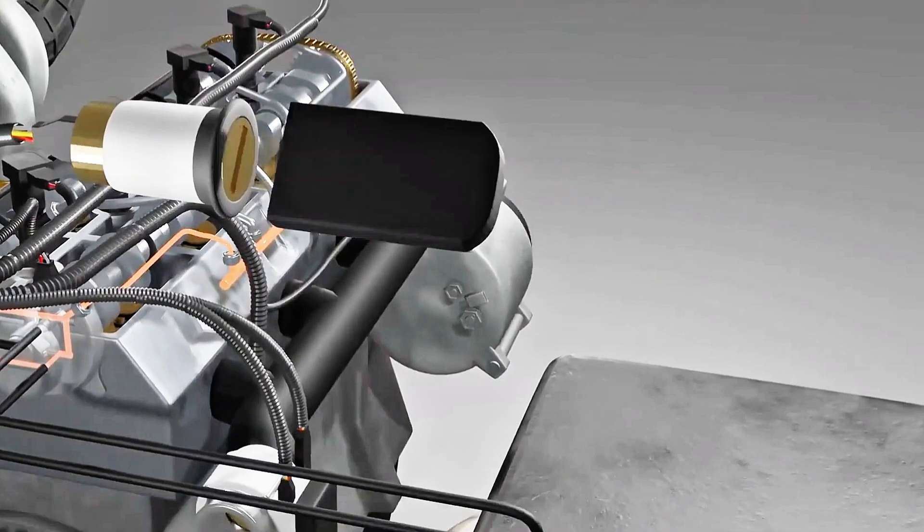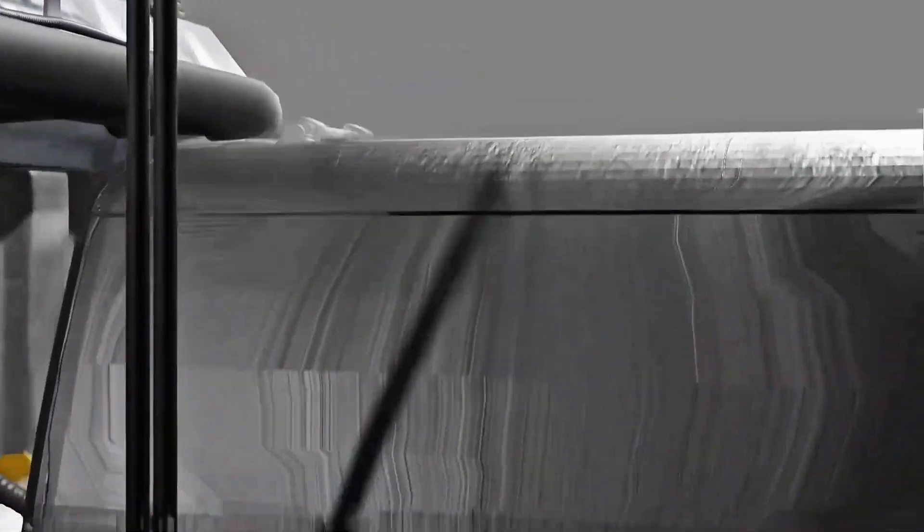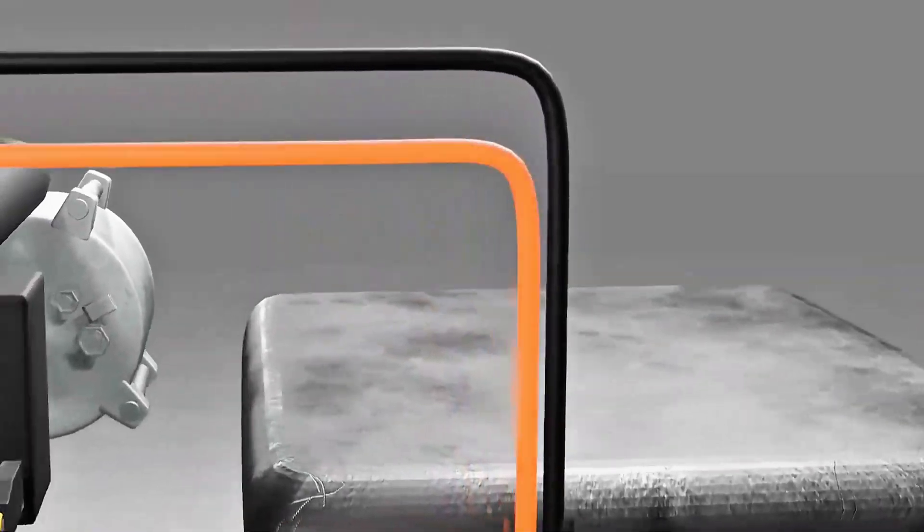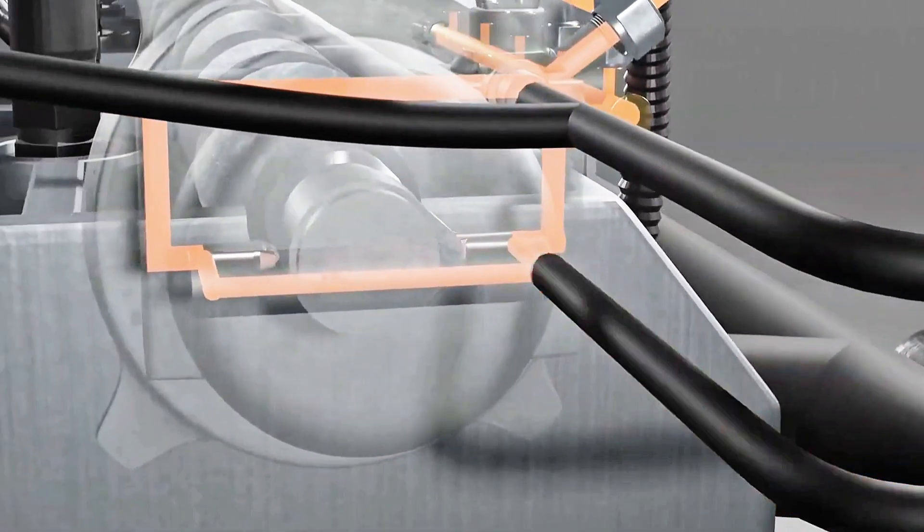When the ignition is on, the low pressure pump will turn on for about three seconds. This is used to push diesel fuel to the high pressure pump so that when the engine is started, air does not enter.